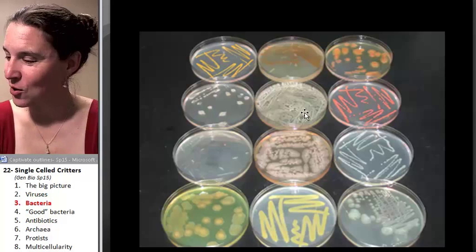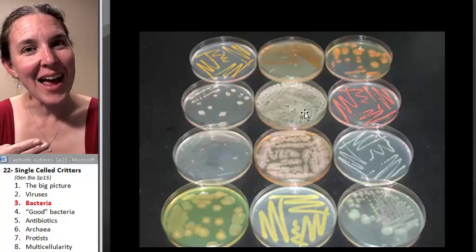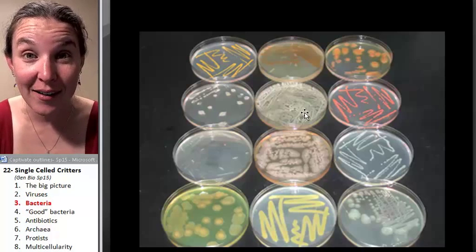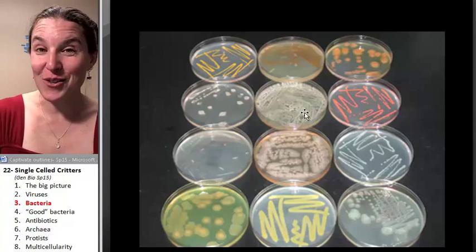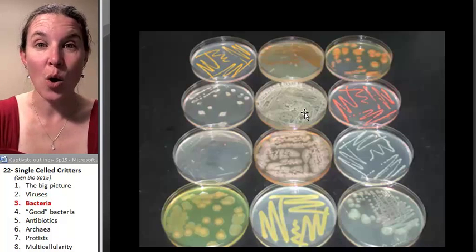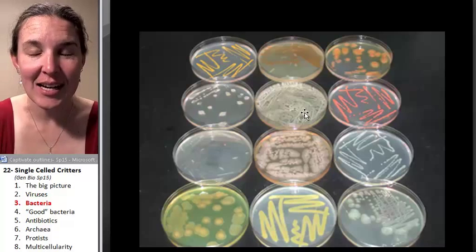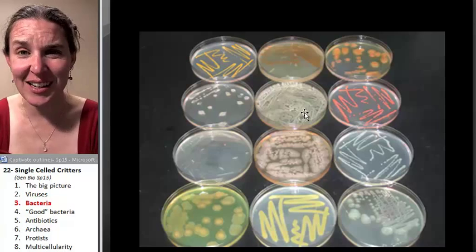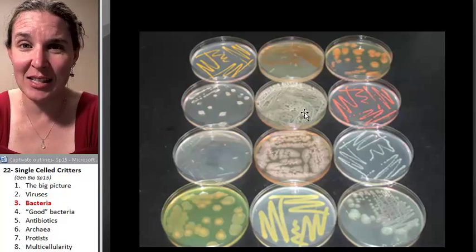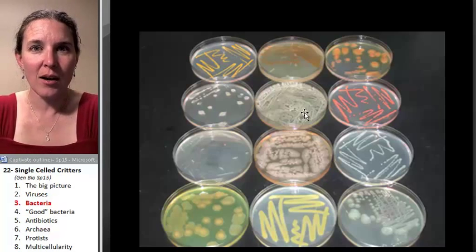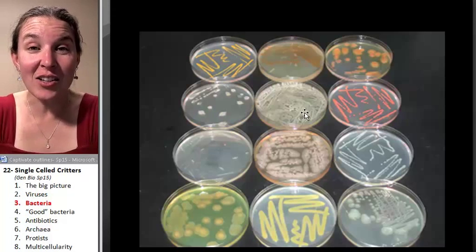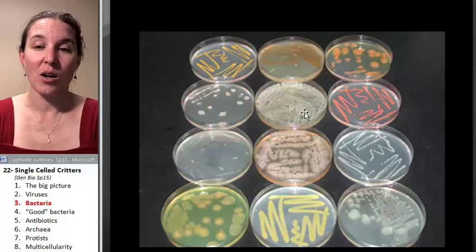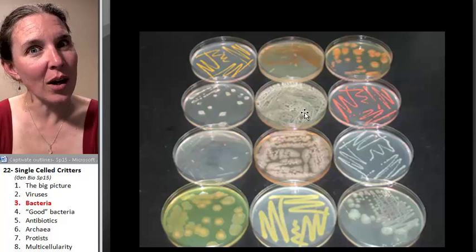If you go to Minnesota and you go to fertile farm soil and do the same thing — grab a gram of soil — there are 20,000 different species of bacteria. Not just different bacteria, not like 'I counted out 20,000 of these guys in this tiny paper clip of soil.' No, I actually counted out 20,000 different species of bacteria.